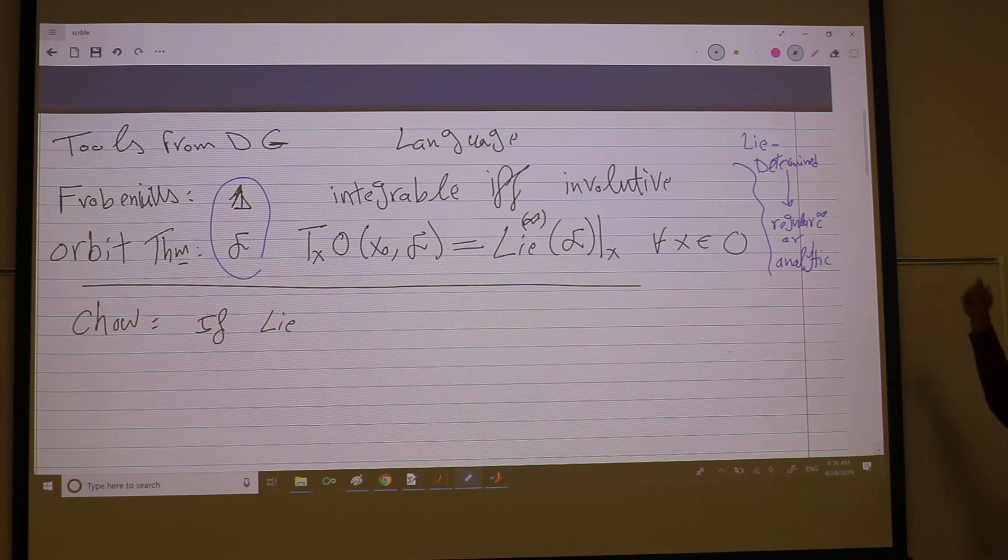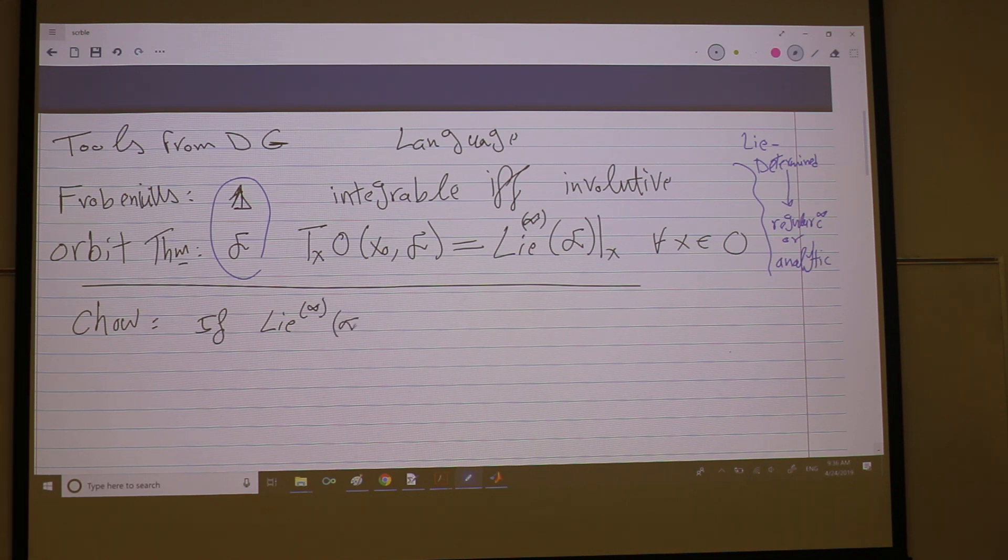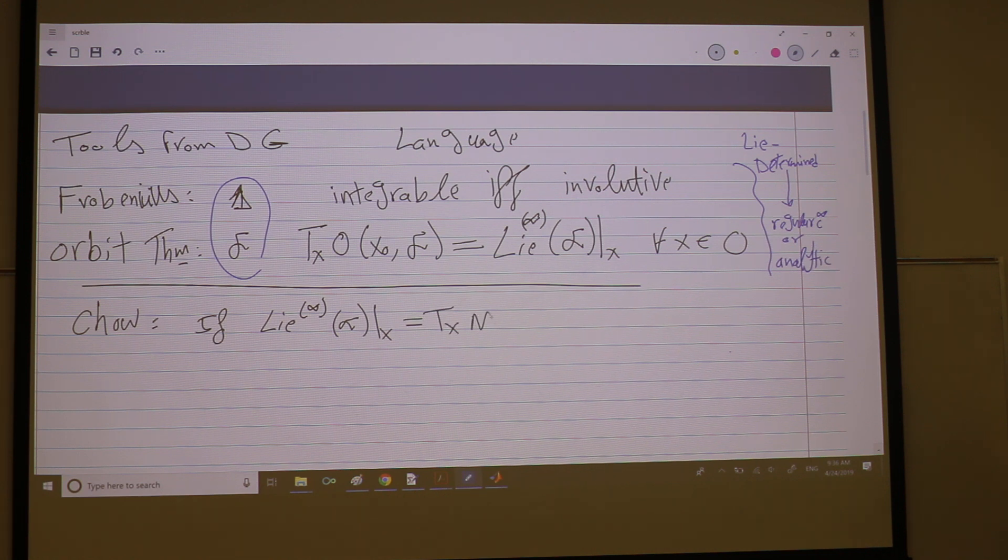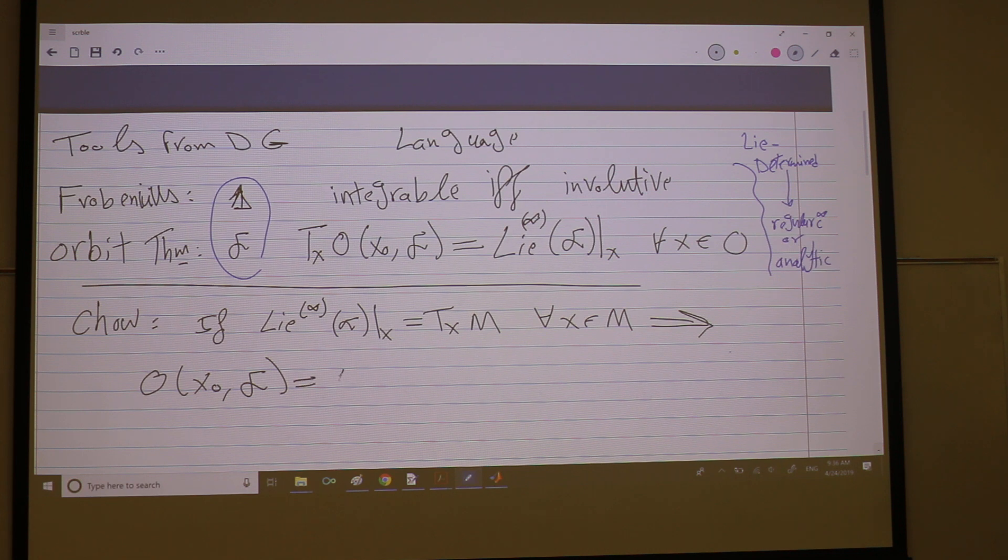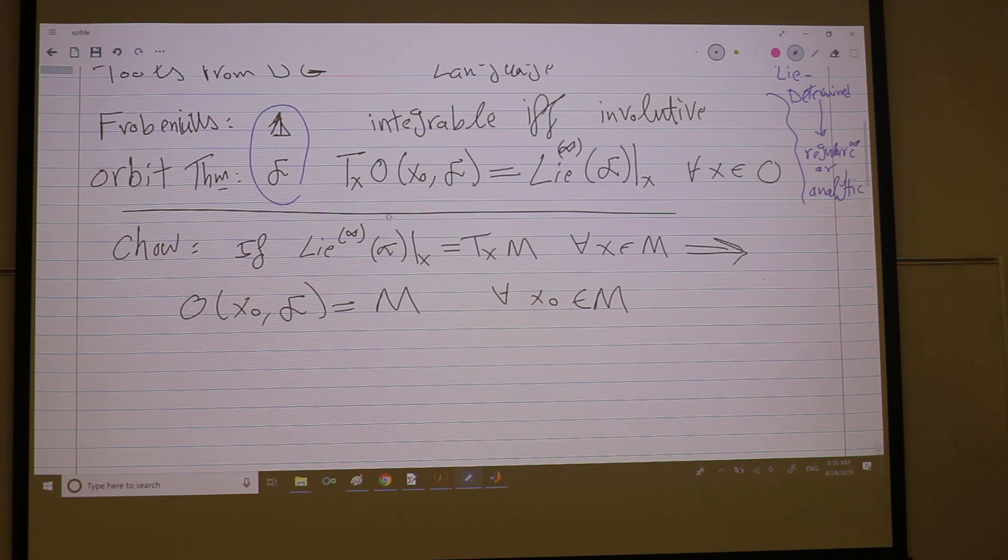For this theorem we don't need to have analyticity or anything. So if your Lie brackets span the tangent space for all x, then of course your orbit through any point will be the entire M. You will reach all points in M from any point.